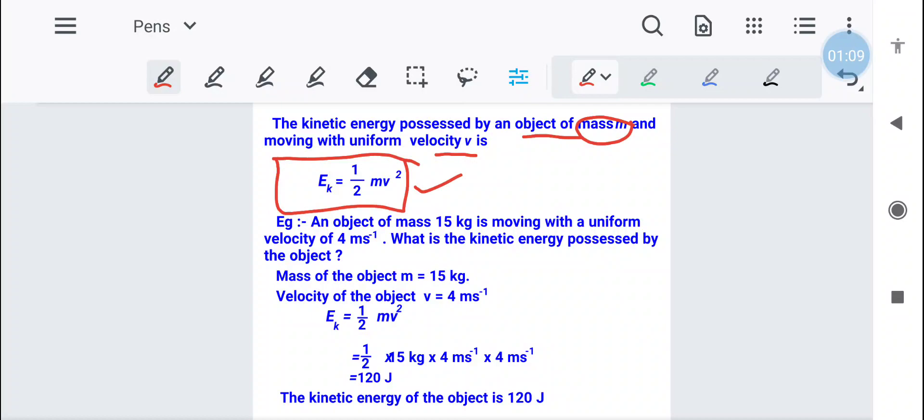An object of mass 15 kg, so mass given is 15 kg, is moving with a uniform velocity. Uniform velocity is also given, v is given. And simply it is asked to find the kinetic energy.